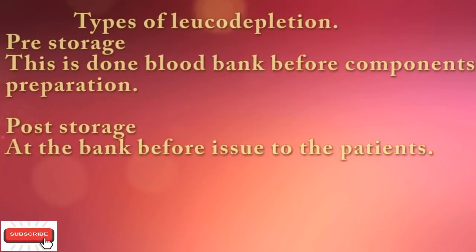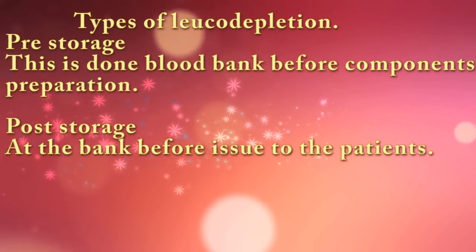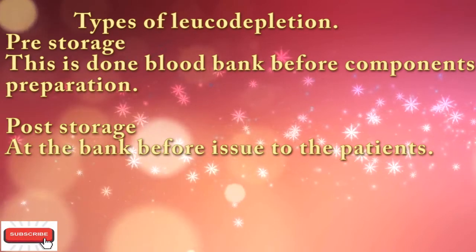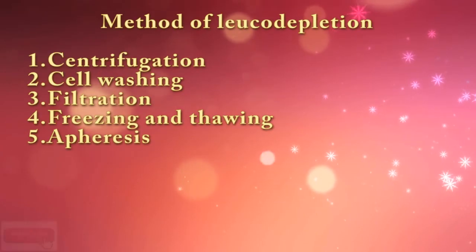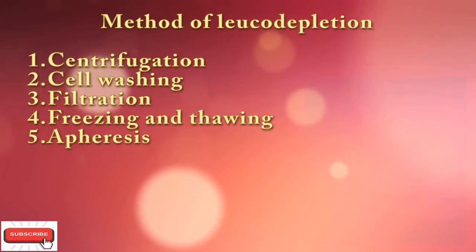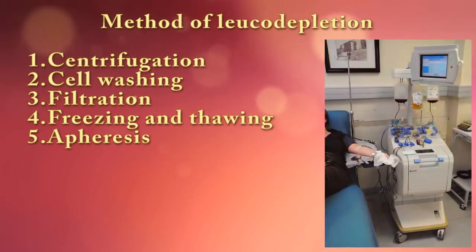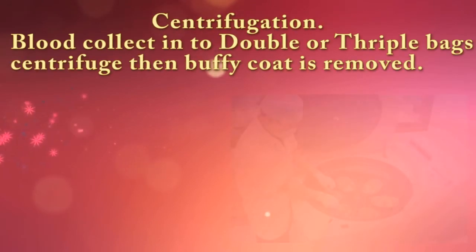There are two types of leucodepletion: pre-storage, done at the blood bank before component preparation; and post-storage, done at the bank before issue to the patient. Methods of leucodepletion include: one, centrifugation; two, cell washing; three, filtration; four, freezing and thawing; five, apheresis centrifugation.